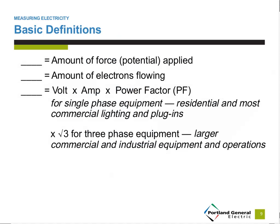Starting with basic definitions: volt is the amount of force or potential applied. The amount of electrons flowing through the wire is the amp. If we have both high volts and high amps, we can have high watts. We'll also introduce the term power factor — think of it as a number between zero and one, and we'll assume for all our math that power factor equals one. So volts times amps times one gives you watts. If you have three-phase equipment, you may need to introduce the square root of three for larger commercial and industrial operations, especially motors. The ohm is the amount of resistance to the flow but will not be used in today's calculations. The combination of these three measurements — volts, amps — equals watts.